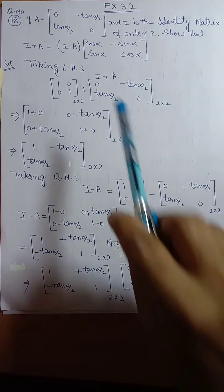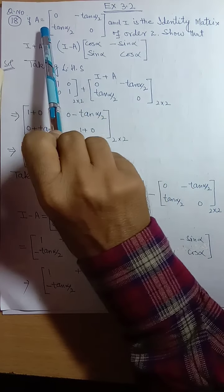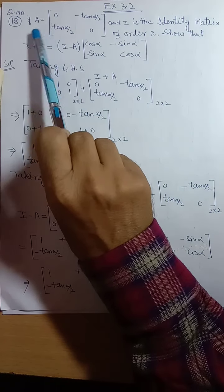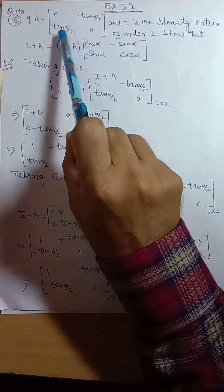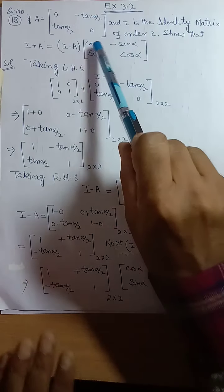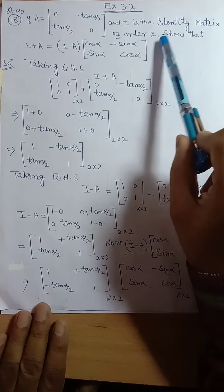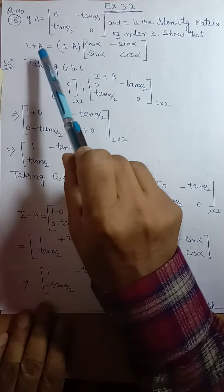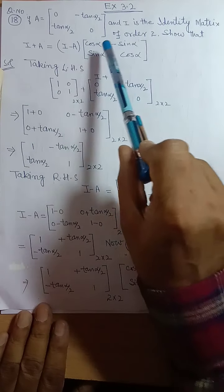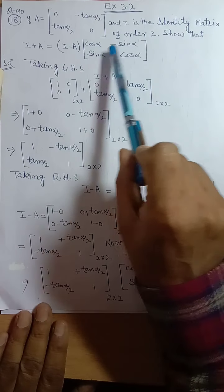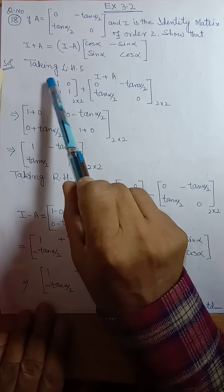Exercise 3.2, question number 18. If A is equal to the matrix [0, -tan(alpha/2); tan(alpha/2), 0] and I is the identity matrix of order 2, show that I plus A is equal to I minus A times [cos alpha, -sin alpha; sin alpha, cos alpha].